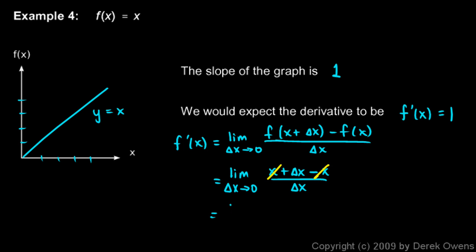And we're just left with the limit as delta x approaches 0 of delta x over delta x. Now if we let delta x be 0, then that's 0 over 0, but clearly delta x over delta x simplifies to 1.